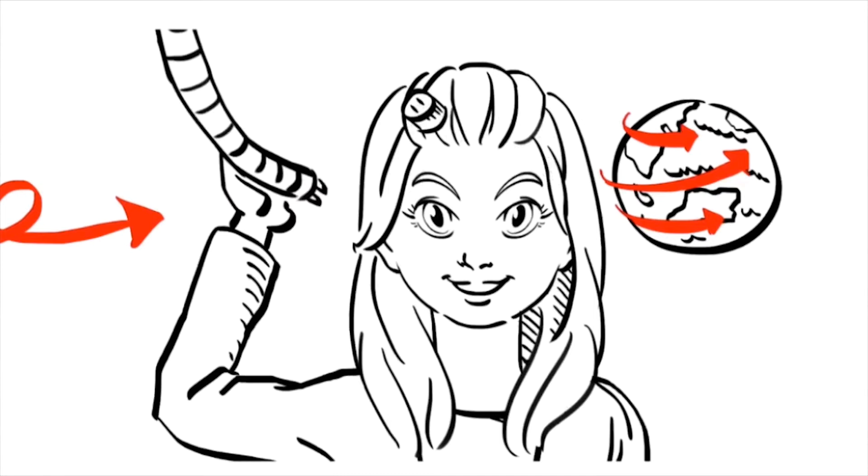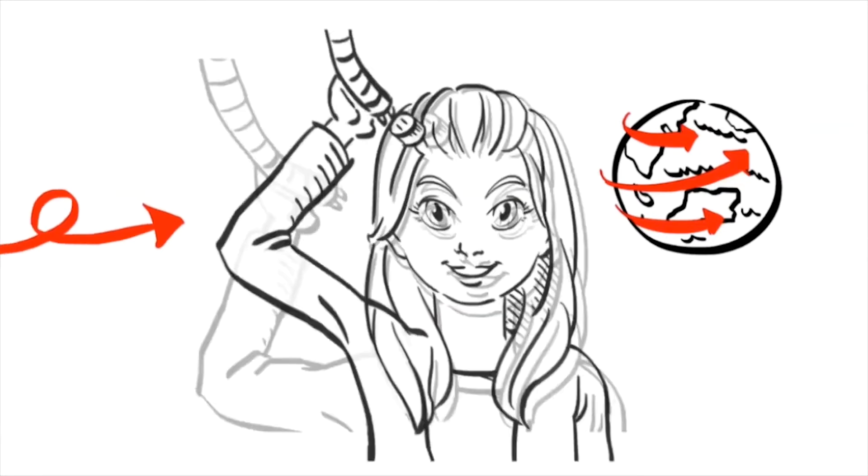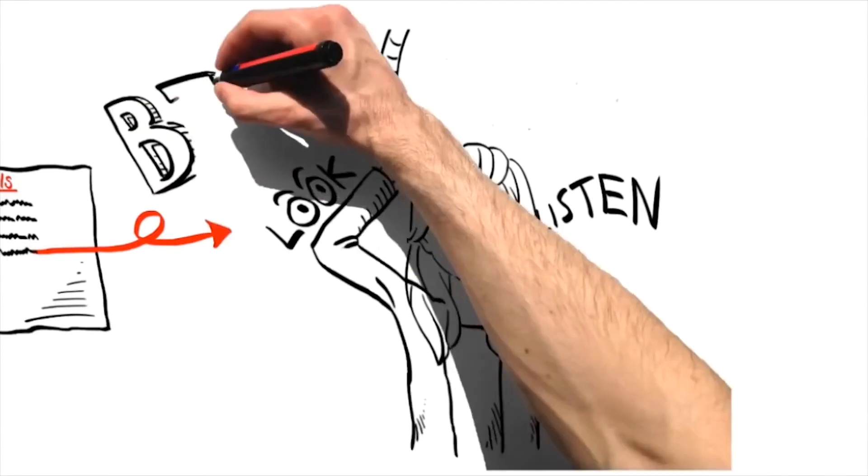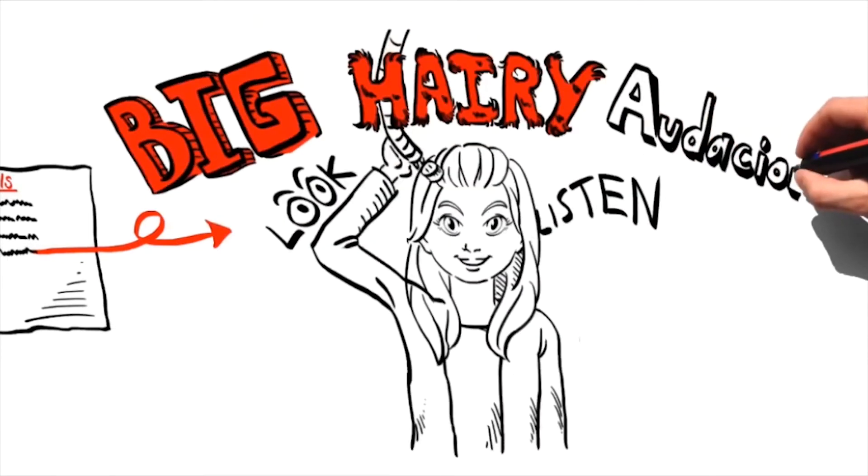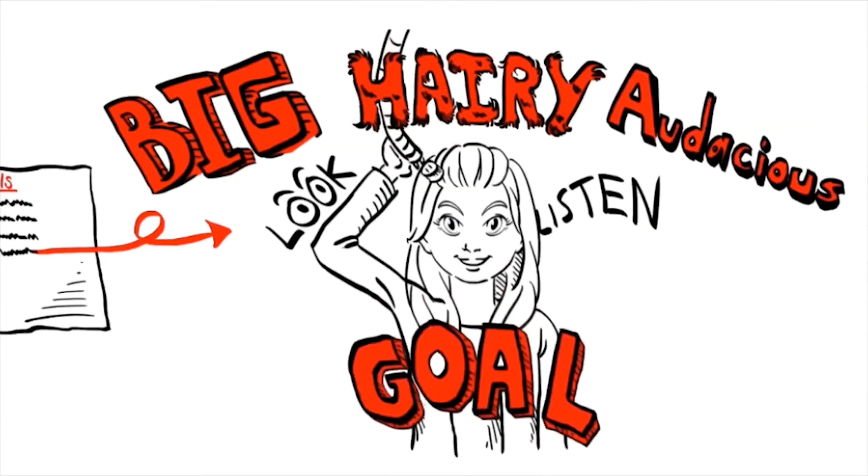So each day, you want to program your brain on what to look and listen for. And not just your beehags, your big, hairy, and audacious goals. That is too ambiguous for your brain to make connections day to day.